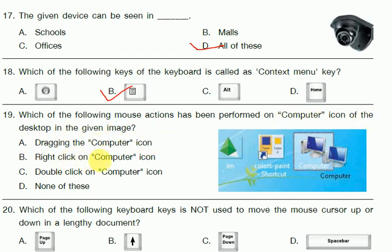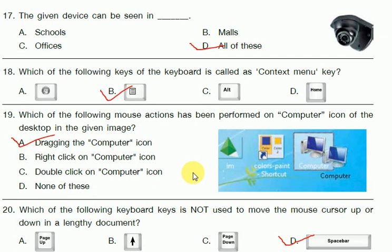Question 19: Which of the following mouse actions has been performed on the computer icon on the desktop in the given image? Dragging the computer icon is the answer. Question 20: Which keyboard key is not used to move the mouse cursor up or down in a document? The answer is D — Spacebar. I have covered questions 1 to 20 of Set B, Year 2015. In the next video I will cover the remaining questions 21 to 35. Thank you.